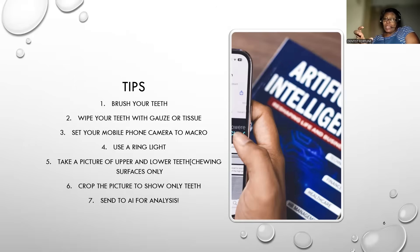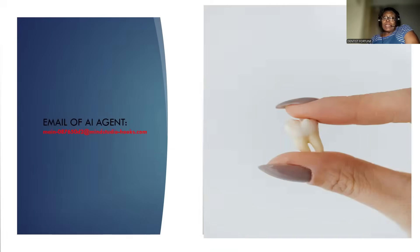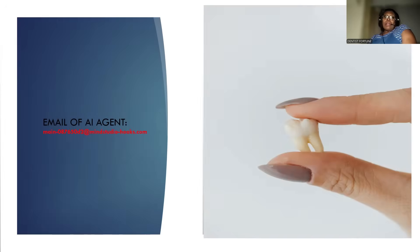Then you can crop it to show only your teeth and email the AI agent directly — it will give you information. This is the email of the AI agent: MAIN-087650d4delta2 at mindstudio-hooks.com.